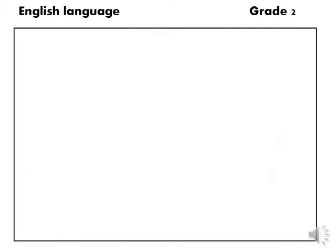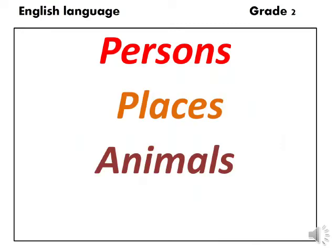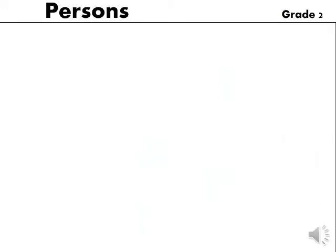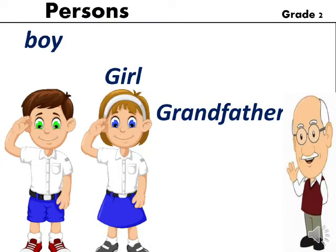Let's discuss one by one what comes in persons, places, animals and things. Persons mean people, and there are so many people around us like boy, girl and grandfather. So boy, girl and grandfather are names of persons and they are nouns.